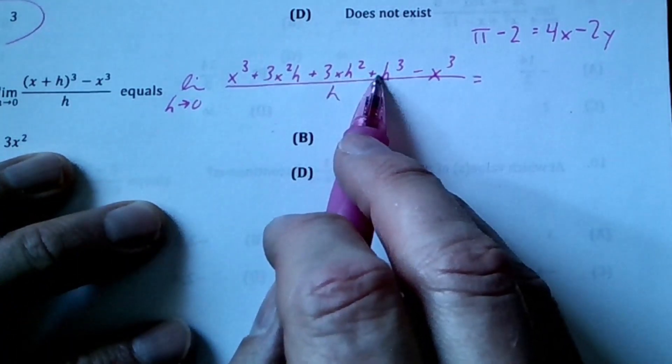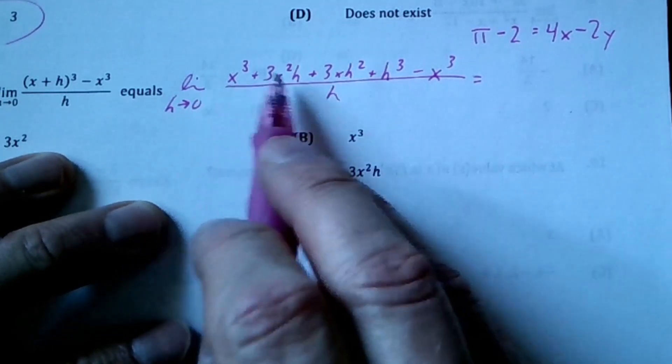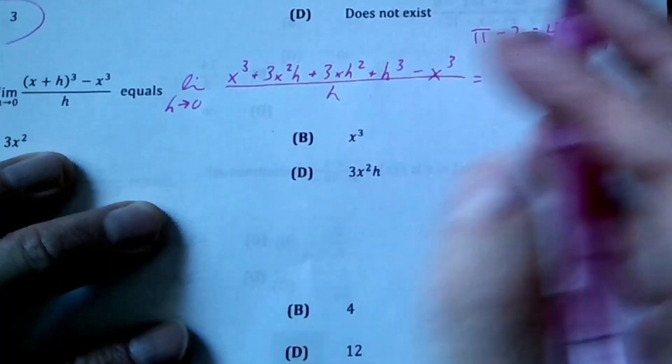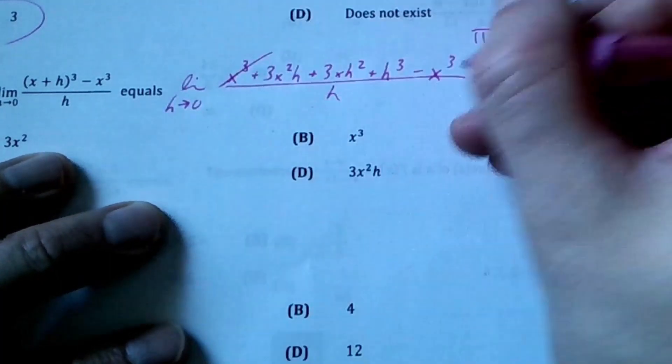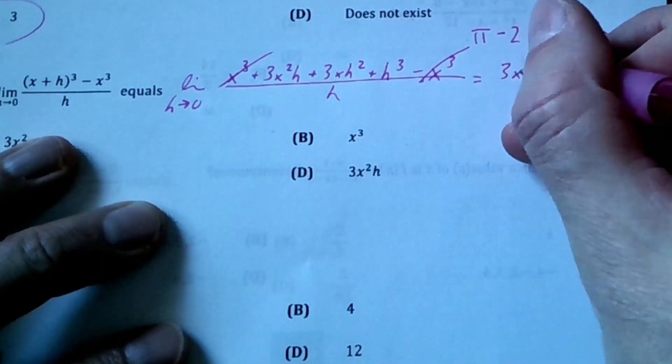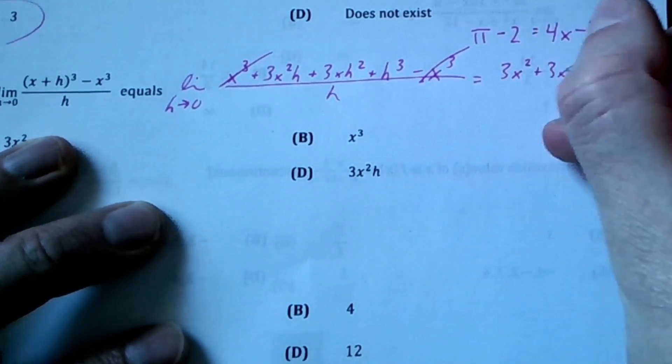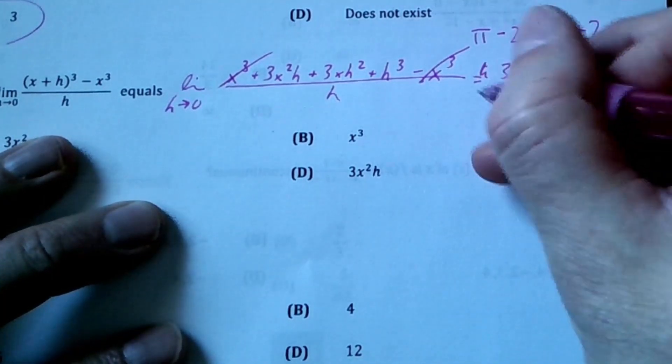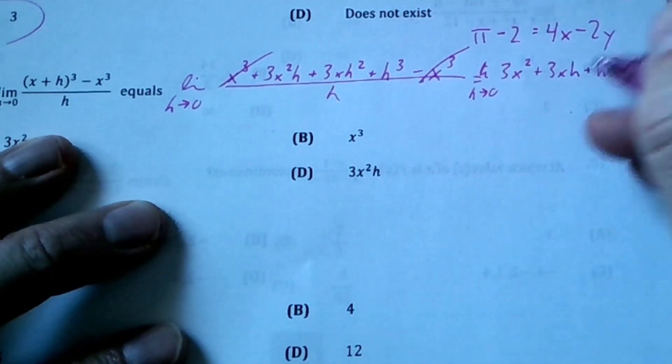This is the binomial expansion we practiced - remember the 1, 3, 3, 1 from the triangle numbers, where we descend degrees and h ascends degrees. These guys cancel out, then you can take an h out of each one and you end up with 3x² + 3xh + h².